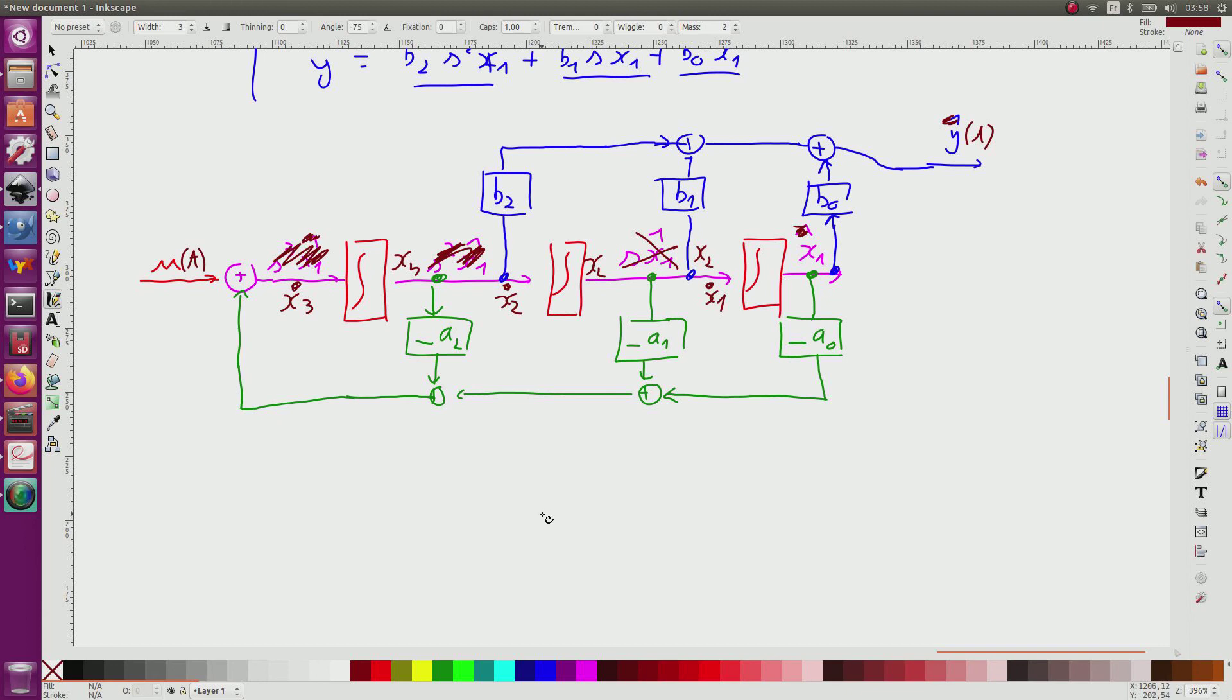And from this I can write the state equation. So I will have equation number three: x dot 1, x dot 2, x dot 3 equals the matrix, x1, x2, x3.